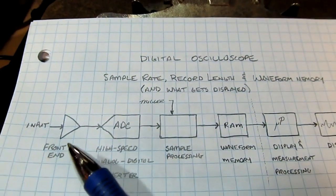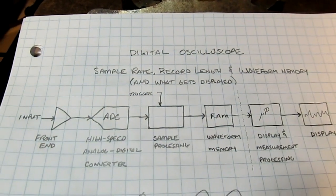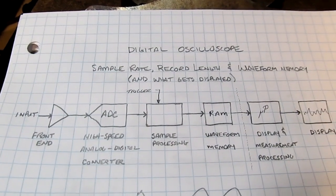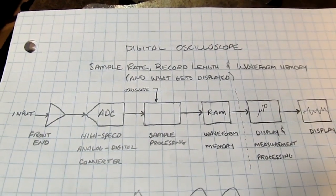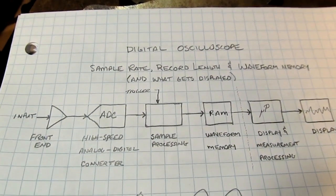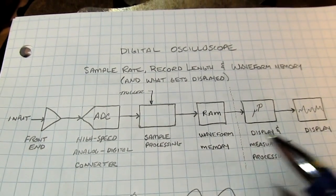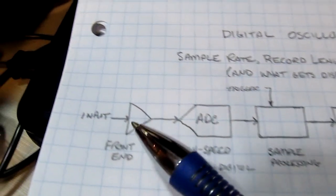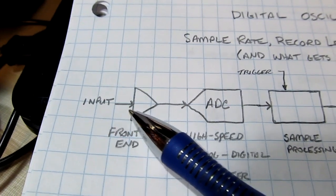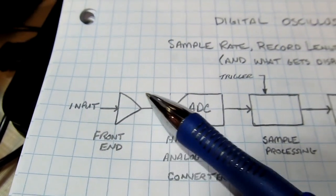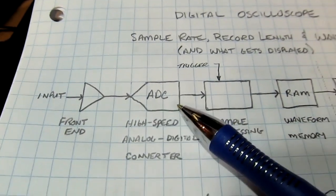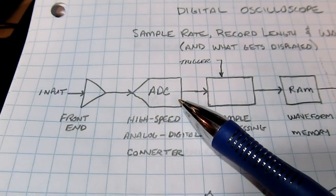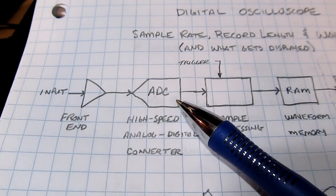Now there's a generic block diagram of the sample processing of a digital scope. Of course there are specific differences with different manufacturers and a lot of detail I'm not showing, but here's the basic process. The analog signal comes into the front end and then that signal is given to the analog to digital converter, which takes snapshots of the voltage over time.